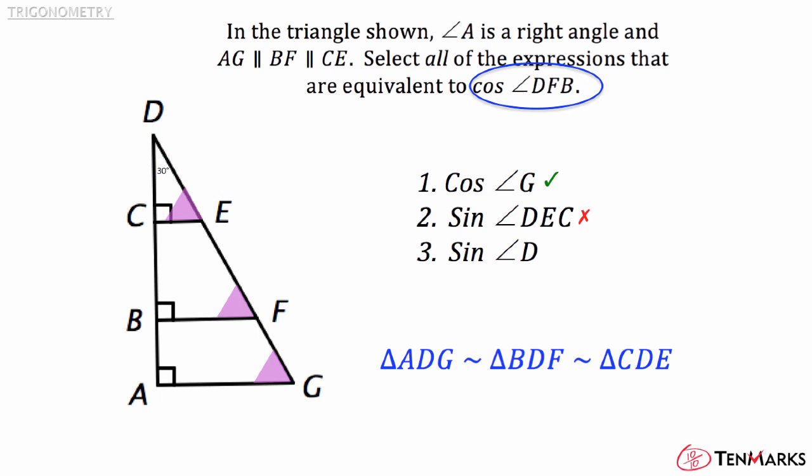How about the last one? Is the sine of angle D equivalent to the cosine of angle DFB? The angles are complementary to each other, which means that the sine of one is equal to the cosine of the other. So the sine of angle D is equivalent to the cosine of angle DFB.